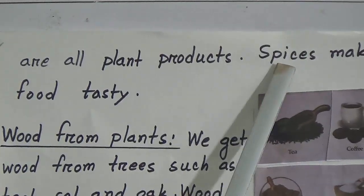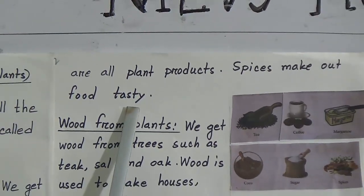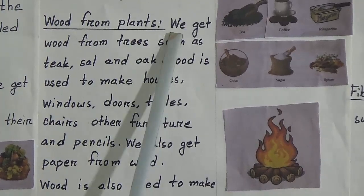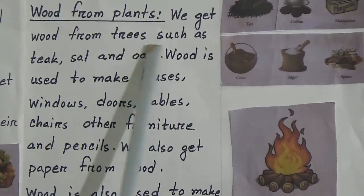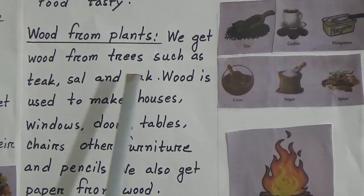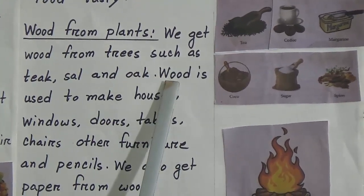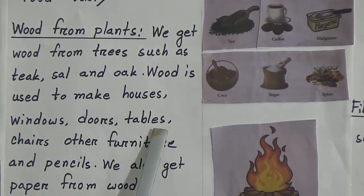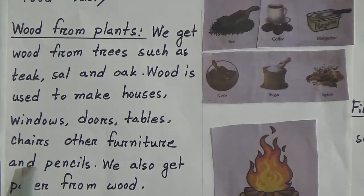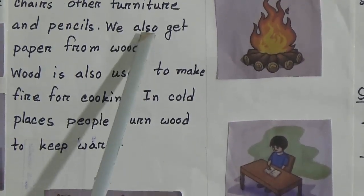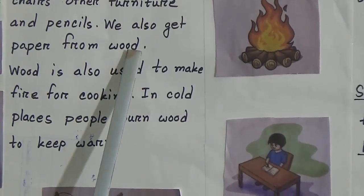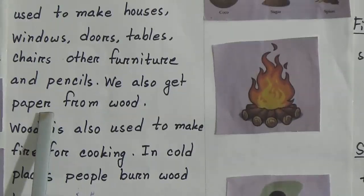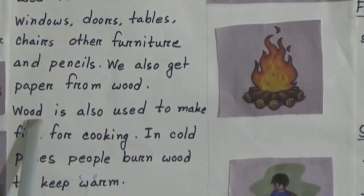Next point is wood from plants. We get wood from trees such as sal and oak trees. Wood is used to make houses, windows, doors, tables, chairs, other furniture and pencils. We also get paper from wood — this paper I have here also comes from wood.